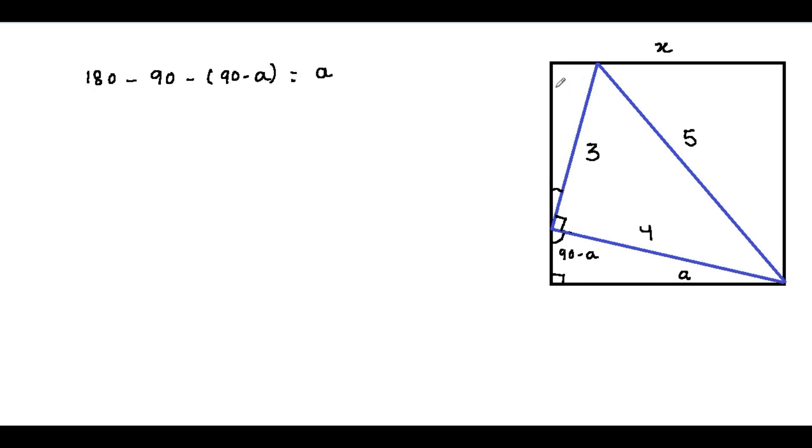Now we have a right angle here at this corner of the square, so the final angle in this triangle will be 90 minus a.